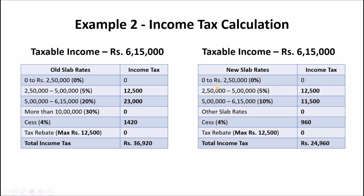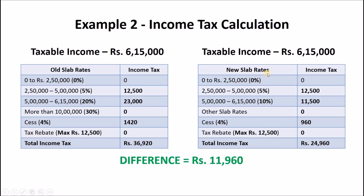Calculating income tax based on new tax slab rates: no tax on income between Rs 0 to Rs 2.5 lakhs; 5% tax on income between Rs 2.5 lakhs to Rs 5 lakhs which equals Rs 12,500; 10% tax on income between Rs 5 lakhs to Rs 6,15,000 which equals Rs 11,500. A 4% cess on total income tax equals Rs 960, making your total income tax Rs 24,960. As you can see, we pay Rs 11,960 less income tax using new tax slab rates compared to old tax slab rates. This is how we calculate income tax in FY2020-21.